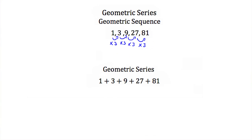Now if you take all these same terms and add them together, then you take your geometric sequence and make it a geometric series. A geometric series is just a geometric sequence where all the terms are added together.